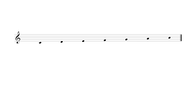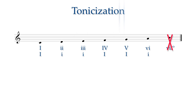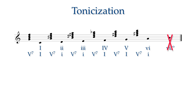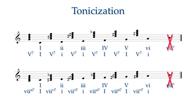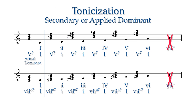Any note in the key that supports a major or minor triad can be made to sound like it is tonic. This is called tonicization. All you need do is to precede the chord that you want to tonicize with its respective dominant or leading tone triad, or seventh chord. This dominant of some scale degree other than tonic is called a secondary or applied dominant. You cannot tonicize a note that supports a diminished triad, such as the leading tone, since there is no such thing as a diminished tonic.